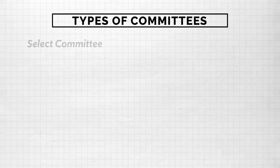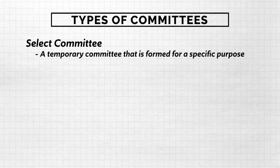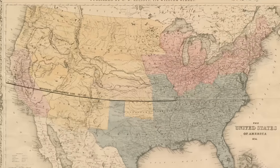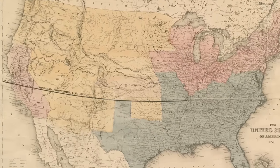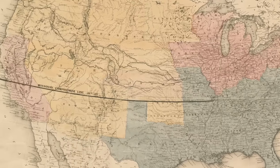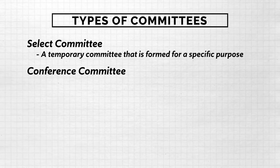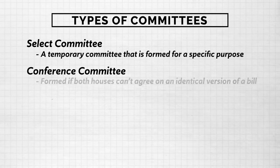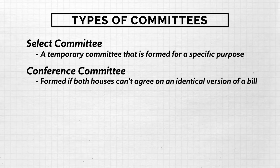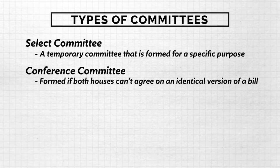The next kind of committee is the Select Committee — the opposite of a standing committee. It's a temporary committee formed for a very specific purpose. For example, the Missouri Compromise, which established where slavery could exist in the United States, was hammered out by a Select Committee that only existed for about a week and was then disbanded. Finally, you need to know about conference committees. In order for a bill to become a law, identical versions must be passed by both houses of Congress. If both houses can't agree, a conference committee is formed to hammer out the differences.